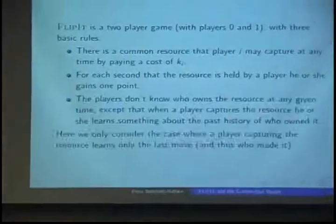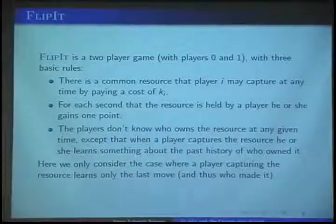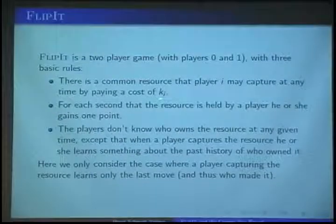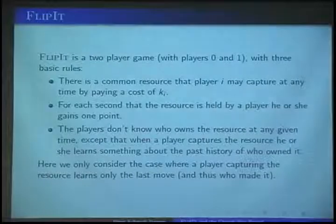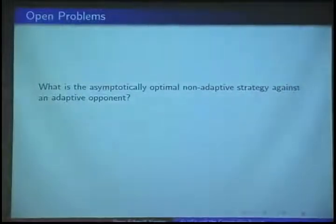So I am talking about Flip It and the Cramér-Rao bound. Ron in his talk explained Flip It — this new, very simple game. You just have a single resource and any player may capture the resource at any time for a small cost, a cost of I for that player. The question is: what is the asymptotically optimal non-adaptive strategy against an adaptive opponent?